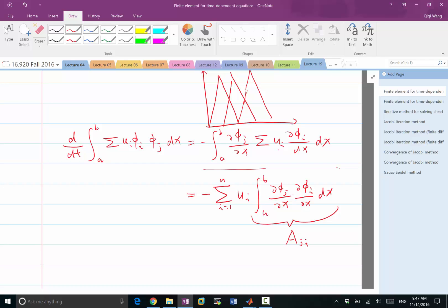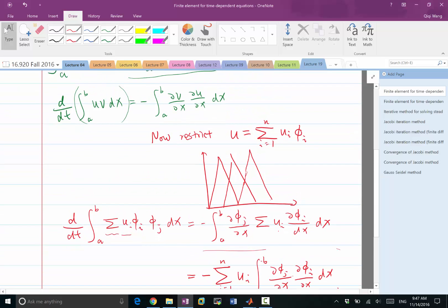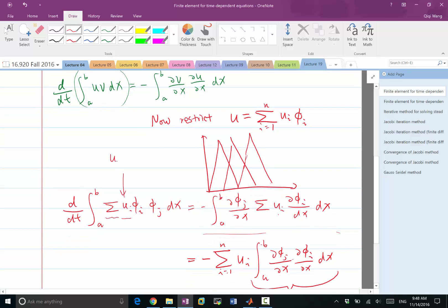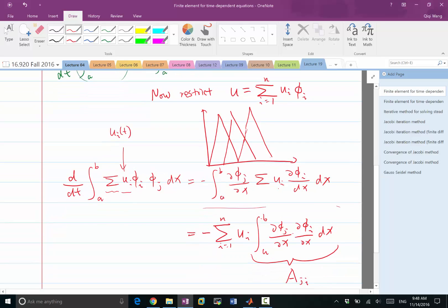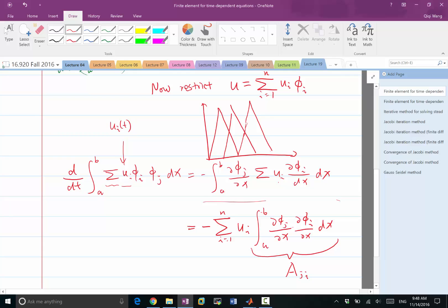And the left-hand side is a little bit different. The left-hand side, we still pull all of these out, but remember these ui's, they are individual numbers at every t, but these ui's are what makes the solution u time-dependent. So ui's are actually functions of t, while the phi_j and phi_i, they are not functions of t. Therefore, we can pull the summation of ui's out of the integral, but we cannot pull it out of the time derivative.